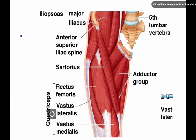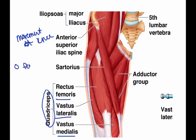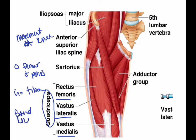Next up we have the quadricep group — rectus femoris, vastus lateralis, and vastus medialis. The fourth quad is under the rectus femoris so you can't see it from this angle, but when you color them you will be able to see it. This is movement at the knee. The origin is the femur and the pelvis, the insertion is the tibia, and it helps to extend the knee and flex the hip and thigh.